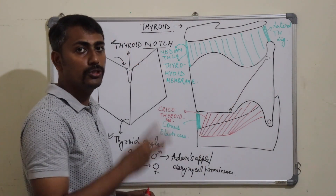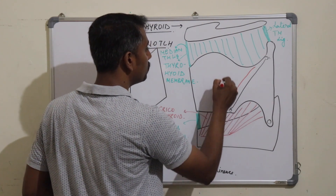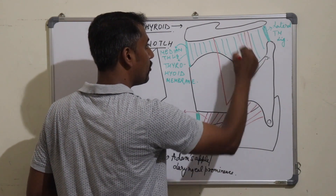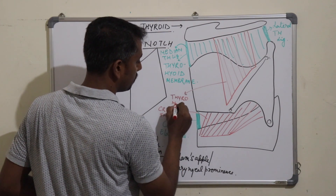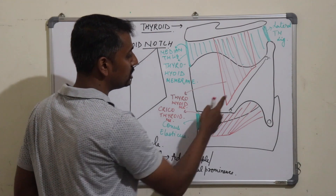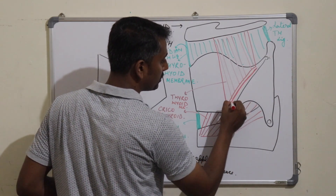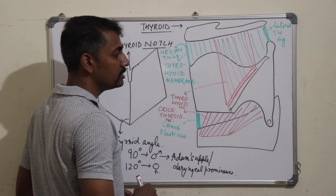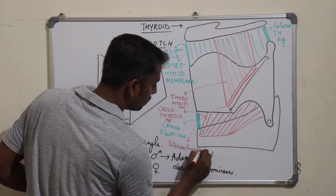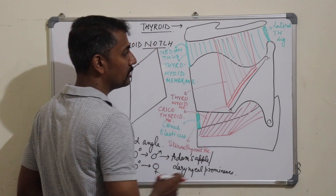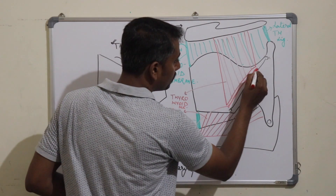The oblique line gives attachment to three important muscles. The first muscle, from above downwards, is the thyrohyoid muscle, which is attached above to the hyoid bone. Just below is the attachment of the sternothyroid muscle, going downwards to attach to the sternum. Below the sternothyroid muscle, the oblique line gives attachment to the thyropharyngeal part of the inferior constrictor muscle.